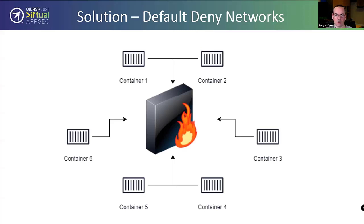How do we fix this from a security architecture standpoint? The answer has to be default deny networks. Kubernetes ships with a feature called network policy, which can be used to provide a default deny setup. It does mean working with developers early in the development lifecycle — a question that needs to be asked when deploying to Kubernetes is: what other things do you need to talk to? What databases? What other APIs? Those policies need to be developed early. You don't want security teams retrofitting network policies after things have gone into production. If you're using certain CNI network providers like Cilium or Calico, they have additional features you can add as well.